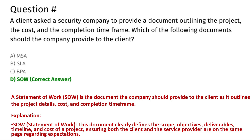The correct answer is option D, SOW — a Statement of Work. A Statement of Work is a document that outlines the project details, cost, and completion time frame. This document clearly defines the scope, objectives, timeline, and cost of the project, ensuring both the client and the service provider are on the same page regarding expectations.